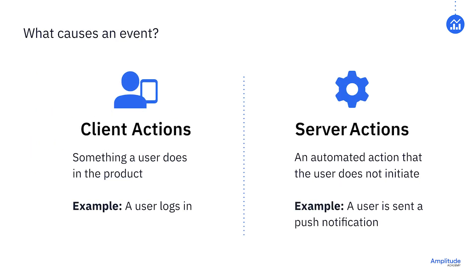A good rule of thumb is that if the event is something a user is doing in your product — for example, clicking a registration button — you should keep that as active. However, if an event is something that happens to a user — for example, the server sends a push notification — you probably want to mark that as inactive. Your daily active users count will only be accurate if you set the right events as inactive.